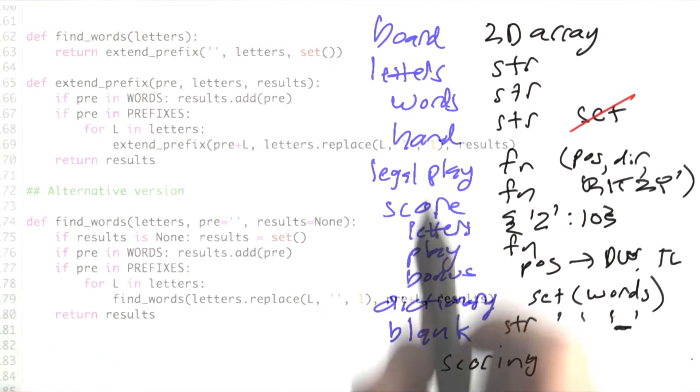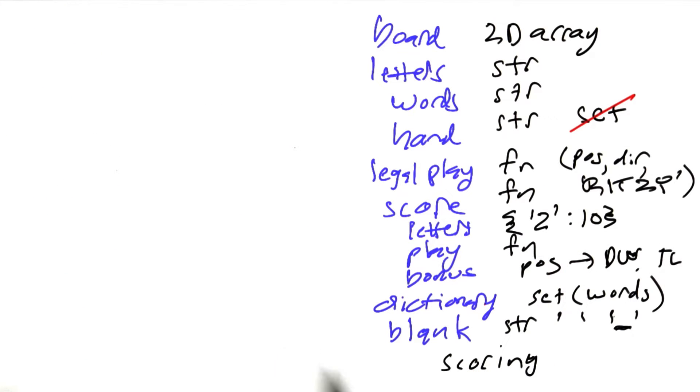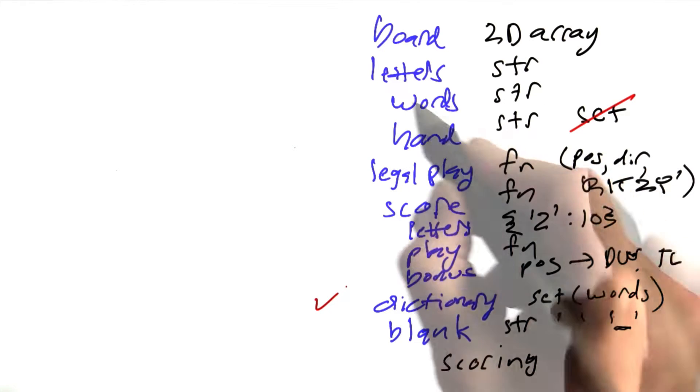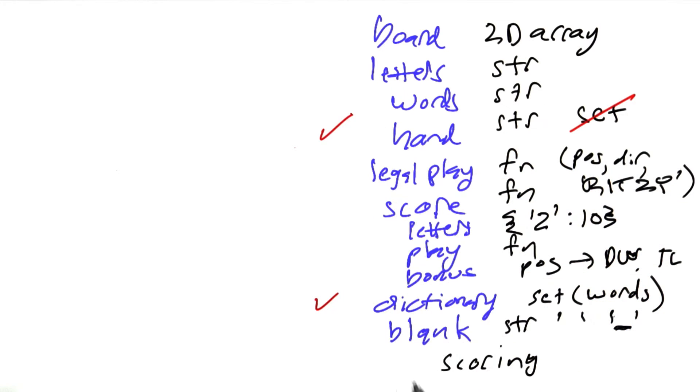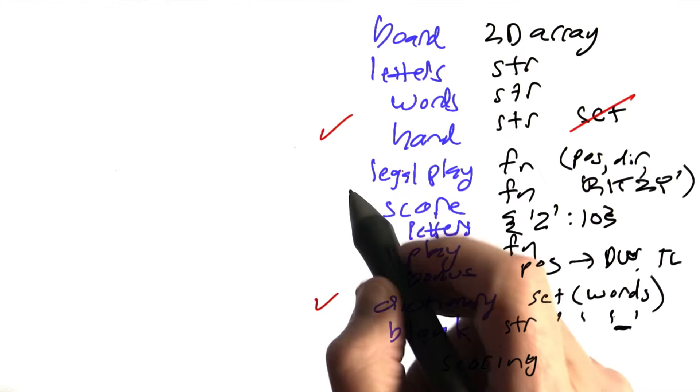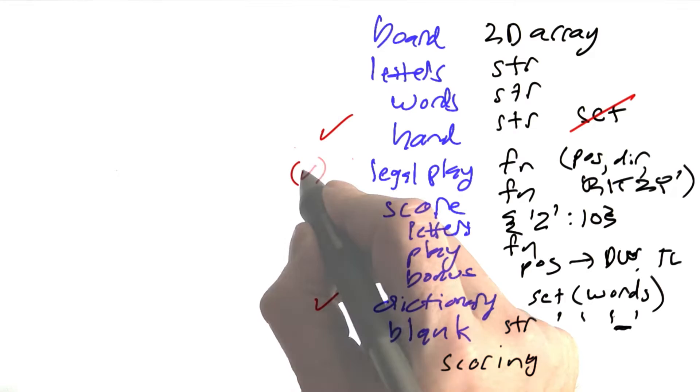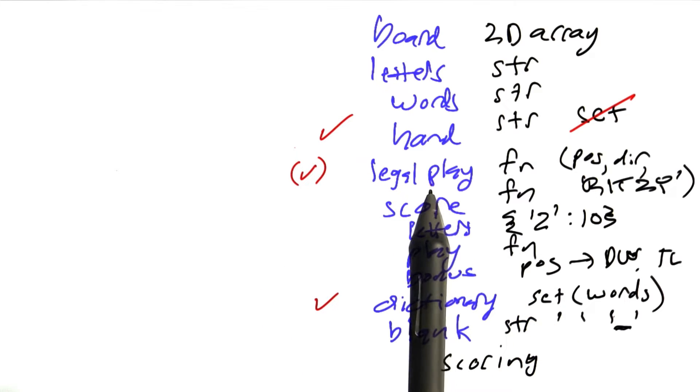What should the next leg be? Let's go back to our list of concepts and say, what have we done so far and what's next? We think we did a good job with the dictionary and we did a good job with our hands here. In terms of legal play, we've got words, so we're sort of partway there, but we haven't hooked up the words to the board. Maybe that's the next thing to do.